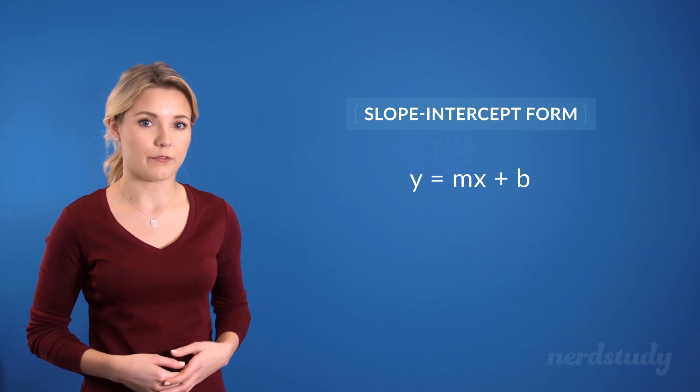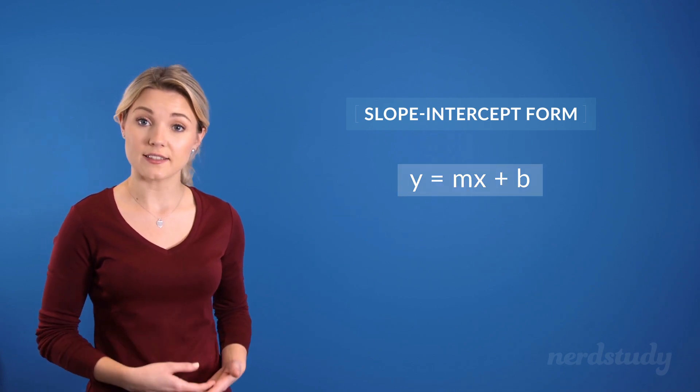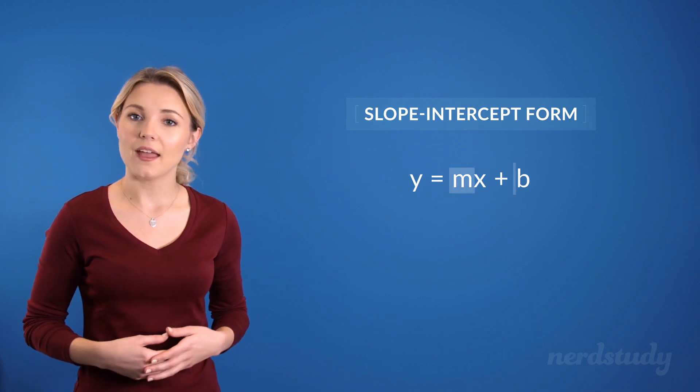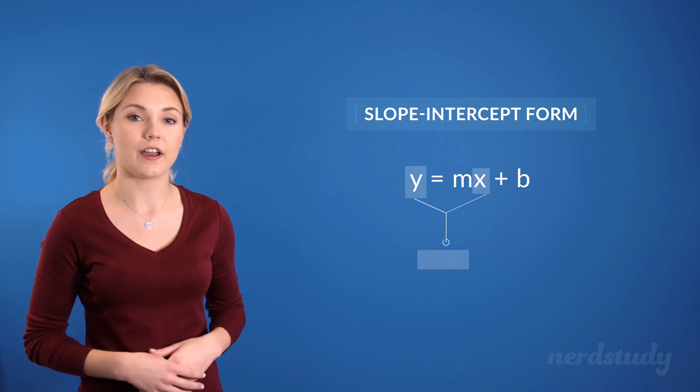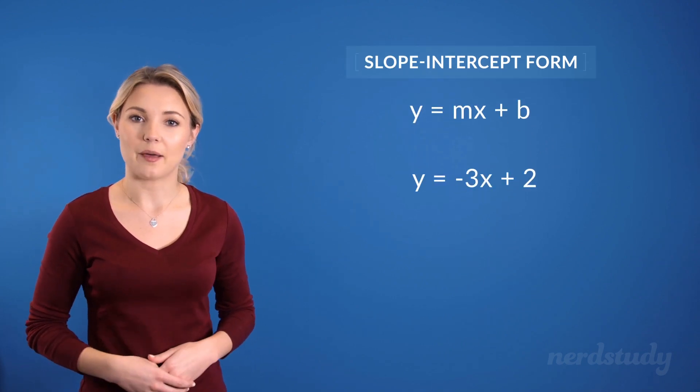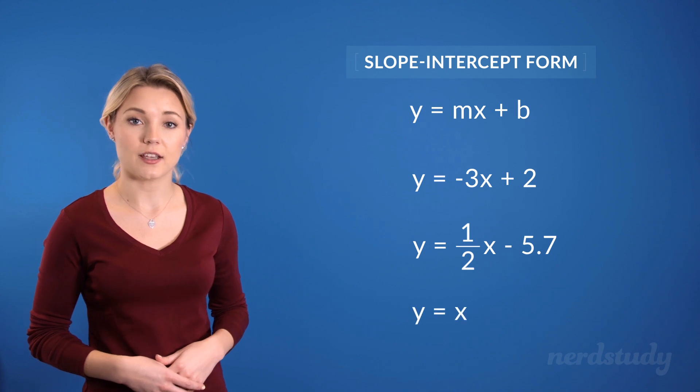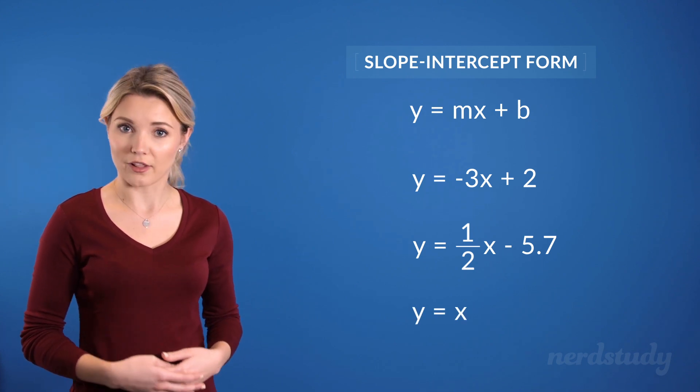The slope-intercept form of an equation follows this format, where m and b are numbers, and of course, x and y are our variables. Here are some examples of what linear equations in the slope-intercept form might look like.